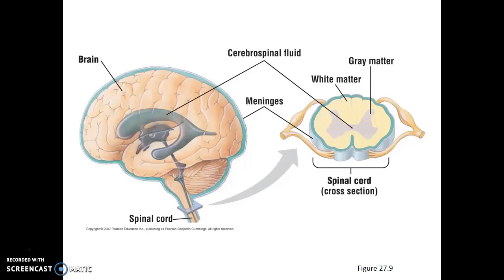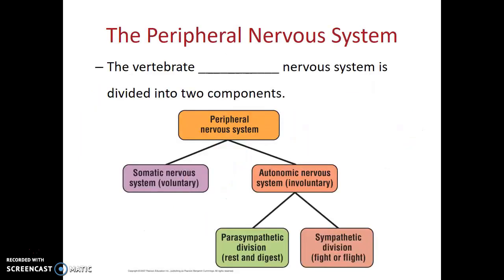The peripheral nervous system for vertebrates is divided into two components: the somatic nervous system, which controls the voluntary nerve signals both to and from our skeletal muscles, and the autonomic nervous system, which is primarily involuntary. The autonomic nervous system is divided into two divisions: the parasympathetic and the sympathetic.